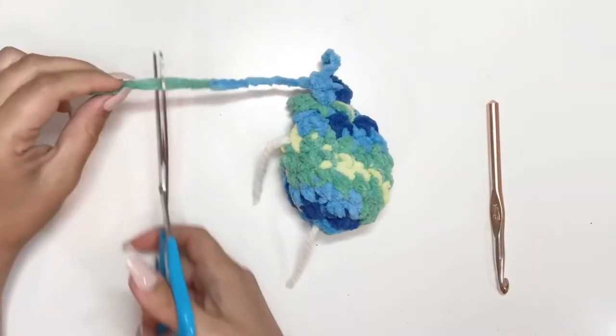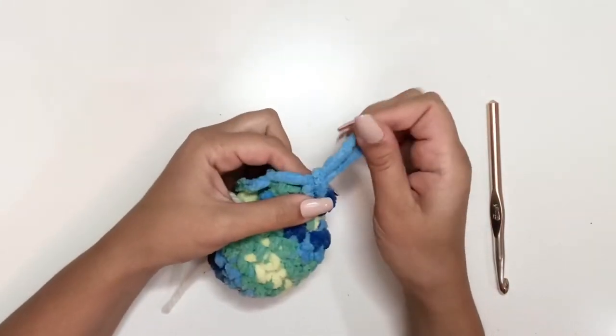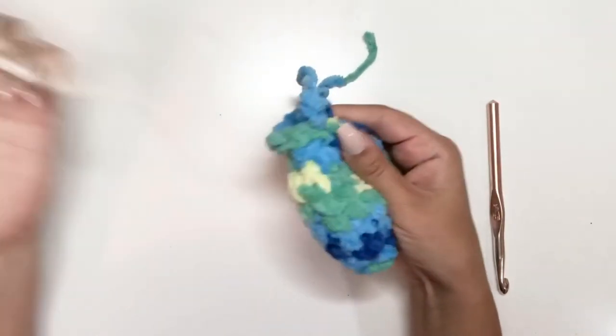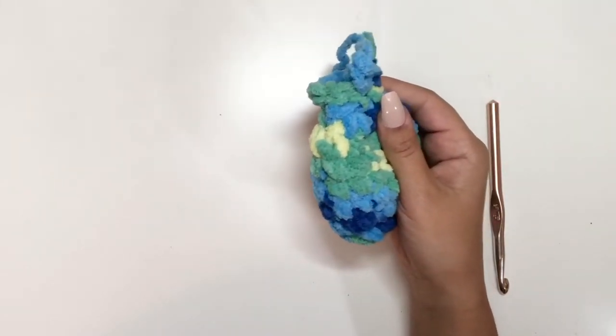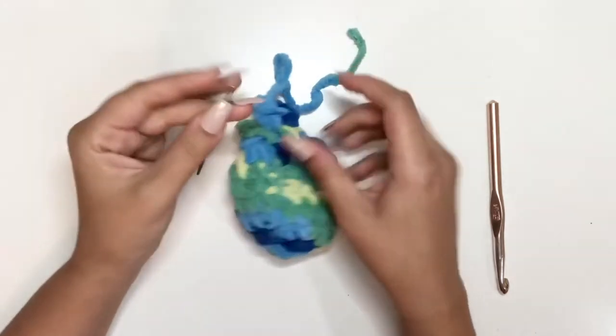And we're going to cut your yarn. We're going to do an invisible join, so pull this strand out. You can pull your stitch markers out now. Take your large needle.